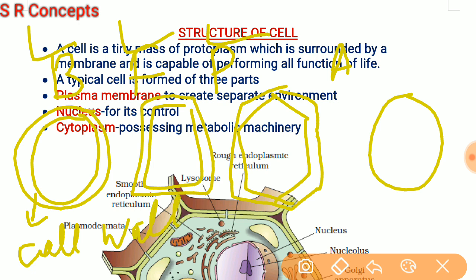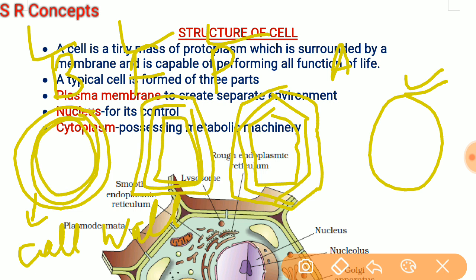In animal cell there is no cell wall. So the bacterial cell, fungal cell, and plant cell have a thick cell wall, but the animal cell doesn't. What is common in all four cells is that they all have a cell membrane. The plant cell has a cell membrane inside its cell wall, similarly fungal and bacterial cells also have a cell membrane. So the cell membrane or plasma membrane is present in every cell.